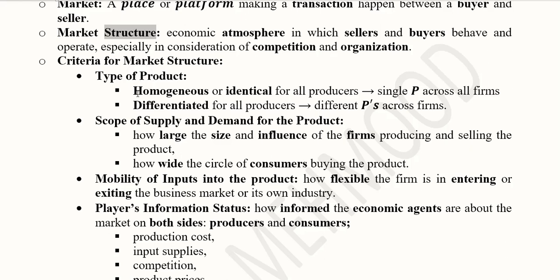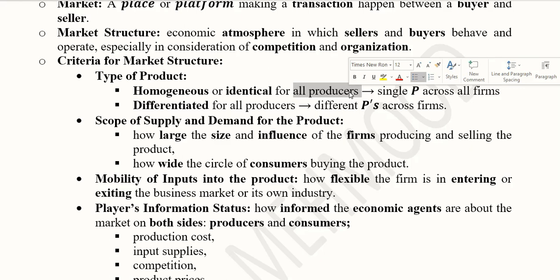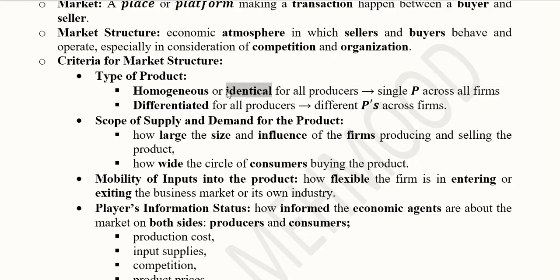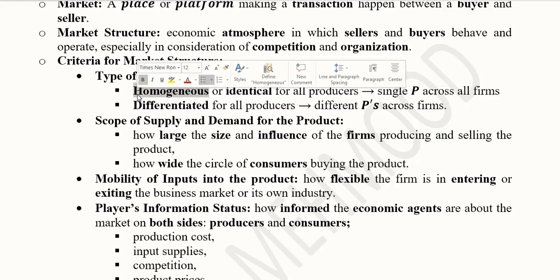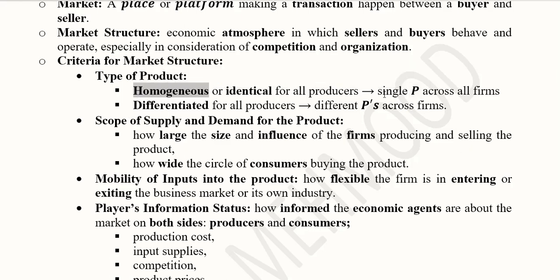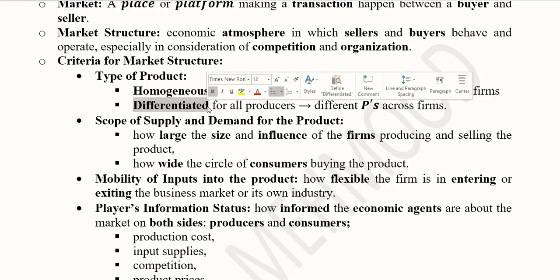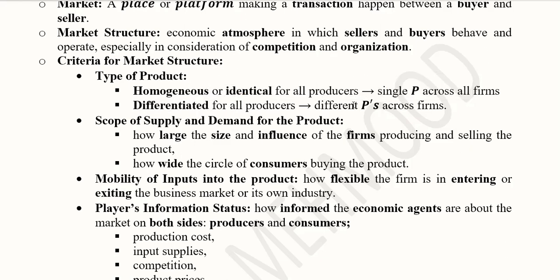The first criterion is the type of product. The product can be either homogeneous or identical for all producers. Homogeneous is something that fits reality more easily — if this situation exists, prices across all firms are likely to be the same. The other possibility is that firms are producing differentiated goods. We see this in today's world of electronic appliances like computers and refrigerators — they are differentiated on the basis of certain features, and their prices also differ.